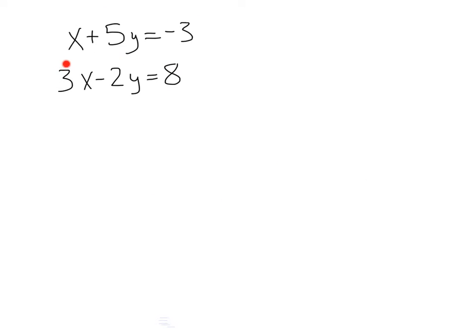All right, here we've got another one. x plus 5y equals negative 3 and 3x minus 2y equals 8. First, do we see a variable already isolated, already by itself? Well, no, it doesn't look like x or y is already alone. So next, let's troubleshoot here. Can we make one of the variables get by itself?